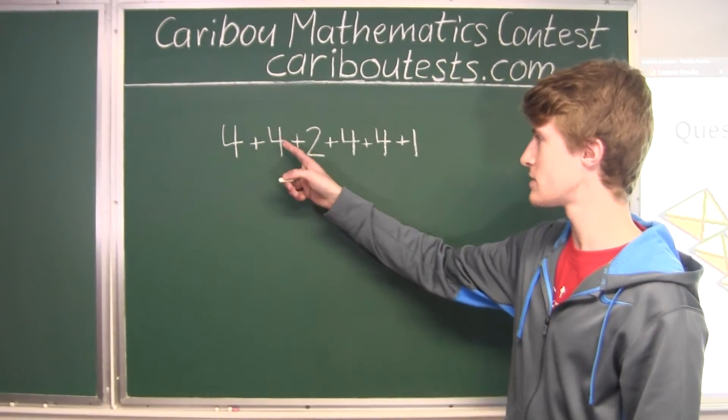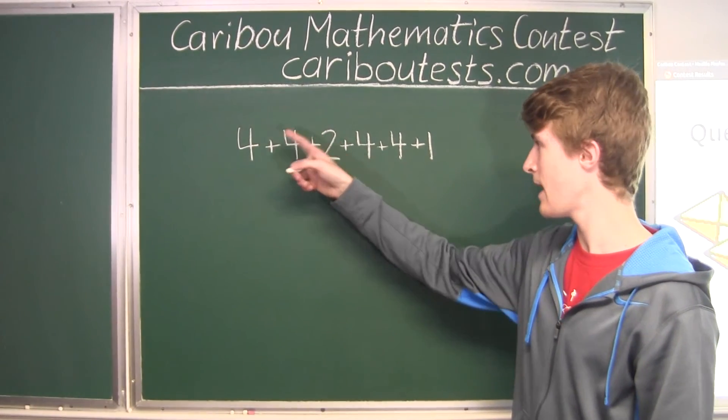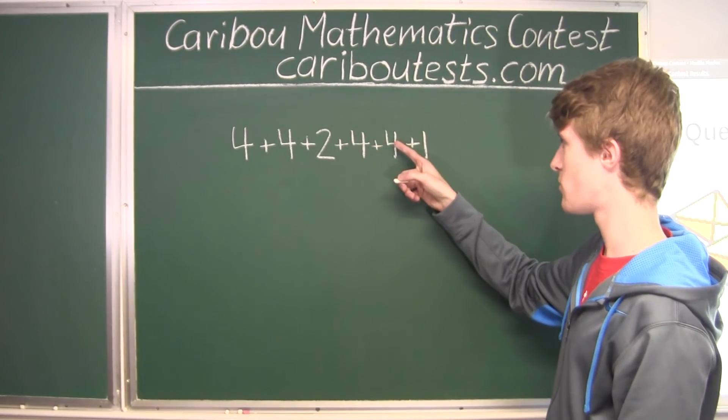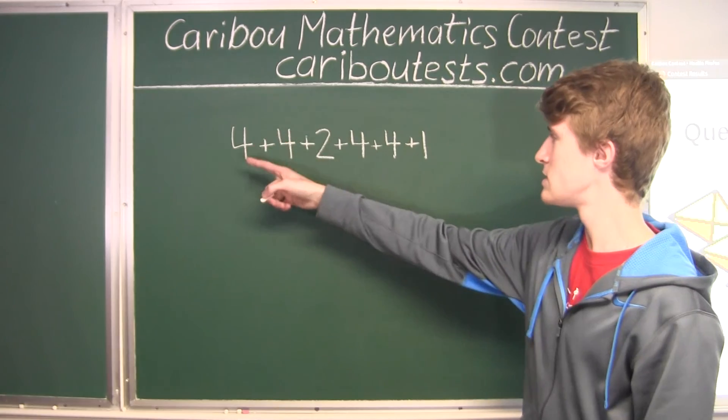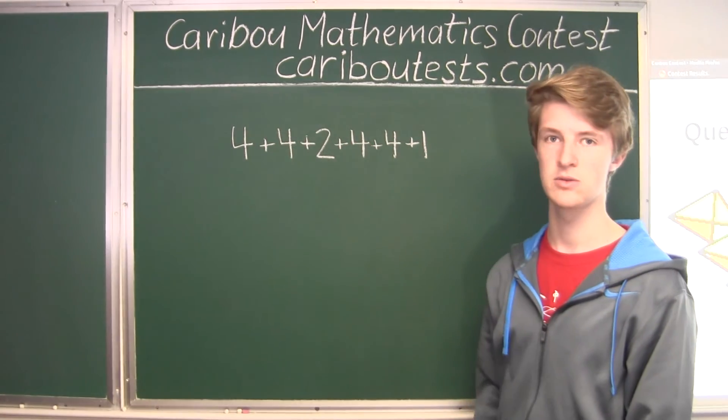So we have 4 plus 4 plus 2, which is equal to 10. And then 4 plus 4 is 8, plus 1 is 9. So 10 plus 9 is equal to 19.